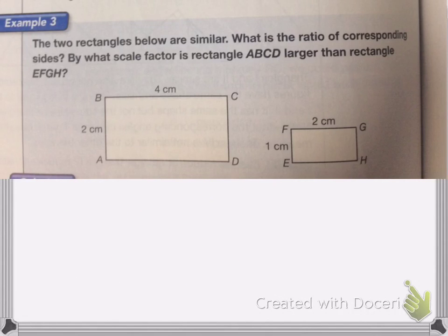Here I have these two rectangles that are similar to each other. And I want to know the ratio of corresponding sides, by what scale factor is rectangle ABCD larger than rectangle EFGH. So they're similar, that means that they're pretty much the same, and the angles are going to be the same. So what I'm going to do is I'm going to look and find the ratios.